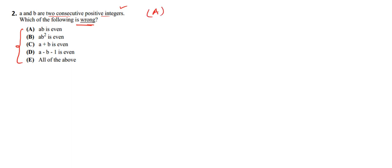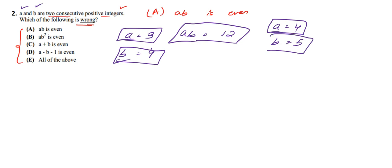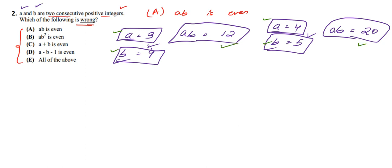Let us check option A: AB is even. Consider A = 3, B = 4; AB = 12, which is even. Now consider A = 4, B = 5; AB = 20, which is also even. These are both possible cases — A odd B even, and A even B odd. In both cases AB is even, so option A is a correct statement and is not our answer.